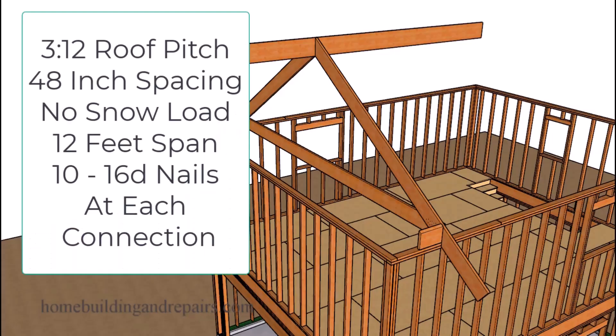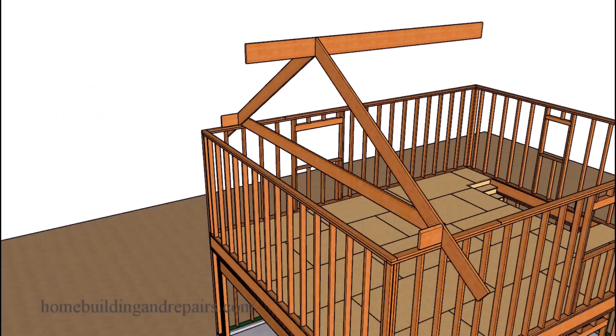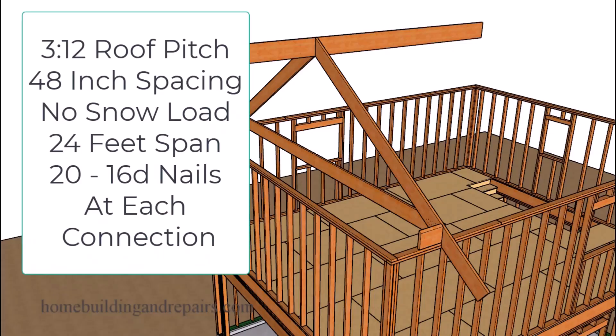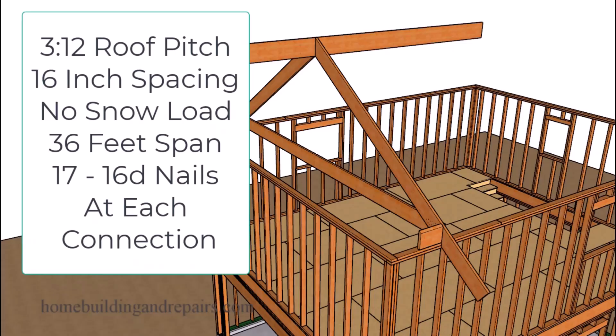And to provide you a couple of examples, if I had a 3 and 12 roof pitch and I was going to space my rafter ties 48 inches on center for a regular roof without a snow load or a live load only on a building with a 12 foot or less span, I would need 10 16D common nails per connection. If that building was going to be between 12 and 24 feet, I would need 20 nails. However, if I was going to space them 16 inches on center on a 36 foot wide building, I could reduce that from 51 to 17 nails per connection.